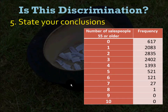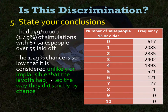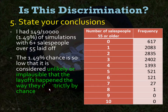Finally, you will state your conclusions. In this case, only 149 out of 10,000 simulations showed that six or more salespeople over 55 were laid off — that's 1.49%. Our final conclusion is that 1.49% is so low that it's considered unlikely or implausible that the layoffs happened strictly by chance. The chance of this just happening by luck is so low that we suspect there might actually be age discrimination going on in this company.